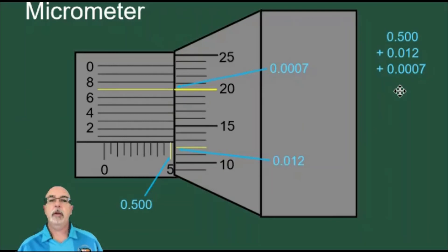Now all we have to do is add the three decimals that we wrote down to get our final reading. 0.500 plus 0.012 plus 0.0007 gives us a reading of 0.5127. That is our measurement. It means the piece we are measuring has 5,127 ten thousandths of an inch as its size. Or more easily, we refer to it as 0.5127 inches.